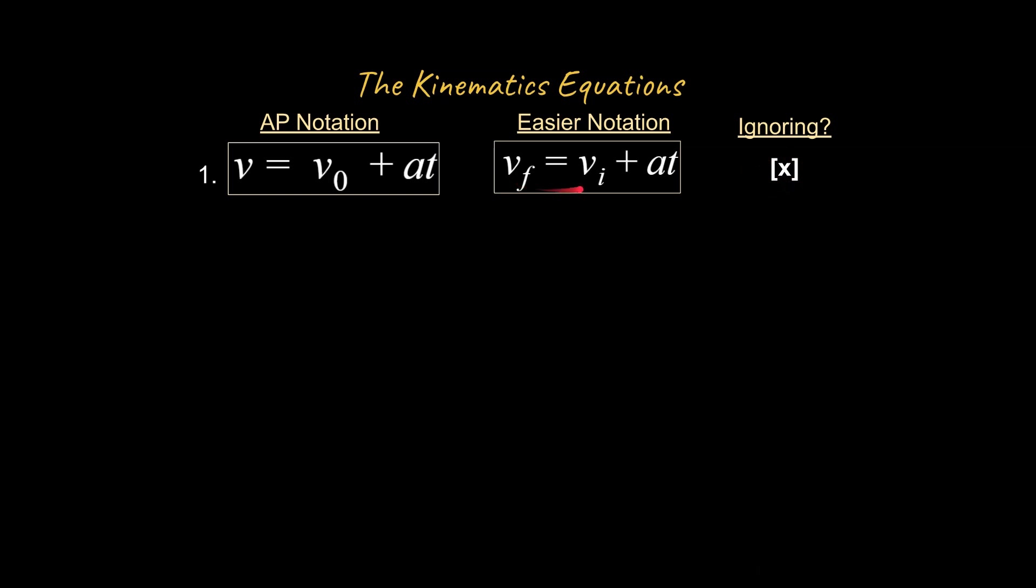So if the problem, let's say, gives you your v initial, your acceleration, and your time, and it asks you to solve for v final, but it says nothing about delta x or x, then you're going to use this equation right here.